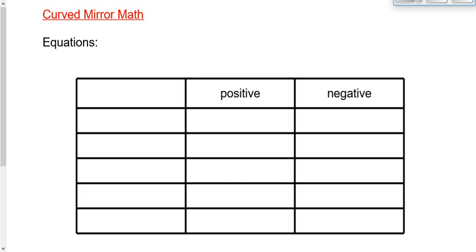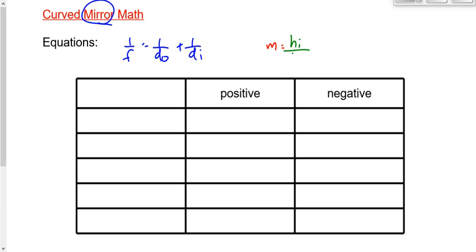Let's take a look at the math for converging and diverging mirrors. This page is exactly the same as the one we filled in for lens math, except it says curved mirror math instead of curved lens math. The two equations are the same. Instead of the lens equation, we call it the mirror equation: 1/F = 1/D_O + 1/D_I. And the magnification equation: M = H_I / H_O = -D_I / D_O. Exactly the same equations.